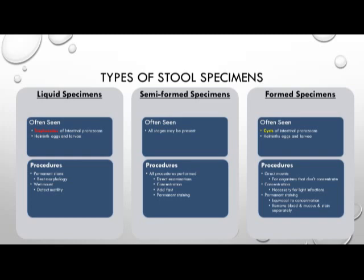In formed specimens, what's most often seen is the cyst stage of intestinal protozoans, as well as helminth eggs and larvae of class Nematoda. The procedures performed on a formed specimen could be a direct mount, concentration procedures for lighter infections, as well as permanent staining. It's important in the presence of a formed specimen to remove any mucus or blood and stain separately.